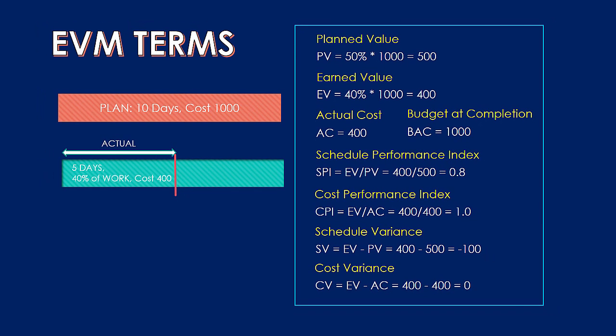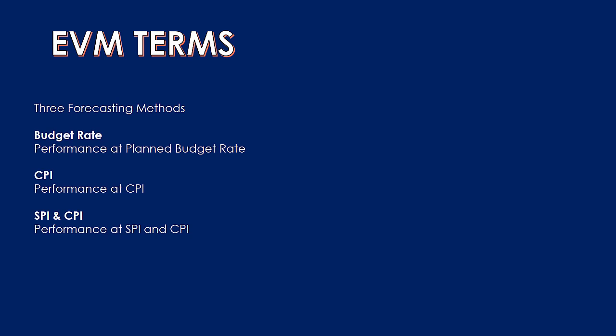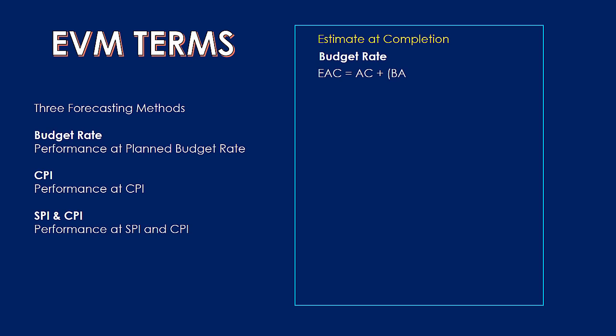An extension of the EVM concept is forecasting. Now that we know how we have performed so far, we can use that information to predict how the rest of the project will go. We will cover three forecasting methods. The first is the budget rate method, which assumes the rest of the project will perform as originally planned. The second is the CPI method, assuming future performance matches our cost performance so far. The third combines SPI and CPI, assuming the rest of the project runs at the efficiency seen in both schedule and cost.